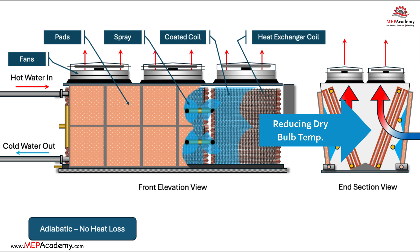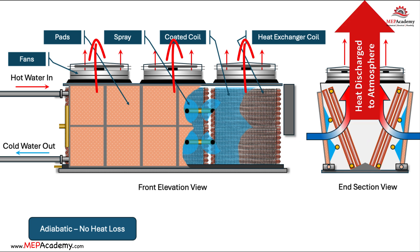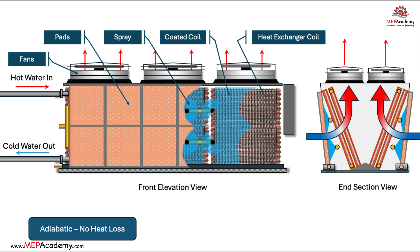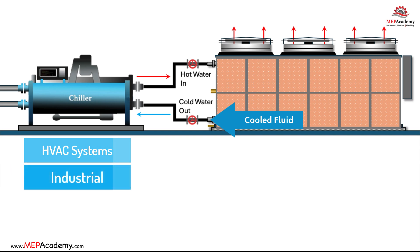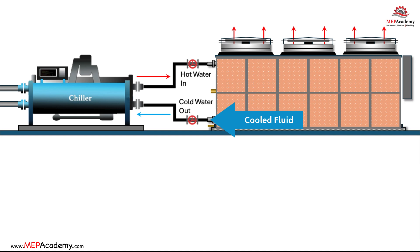This cooled air then passes over the surface of the heat exchanger, where it absorbs heat from the hot fluid inside the tubes and on the surface of the fins. The heat is then discharged to the atmosphere by fans at the top of the unit. As a result, the hot fluid inside the tubes loses heat to the cooled air through the heat exchanger, and the cooled fluid exits the adiabatic fluid cooler to be recirculated back into the system it is cooling, such as an HVAC system or industrial process.